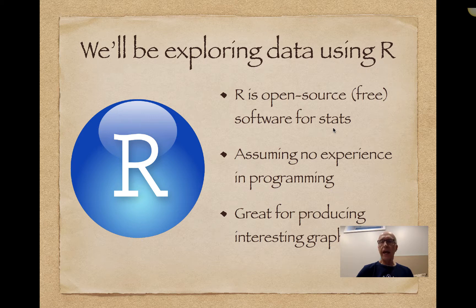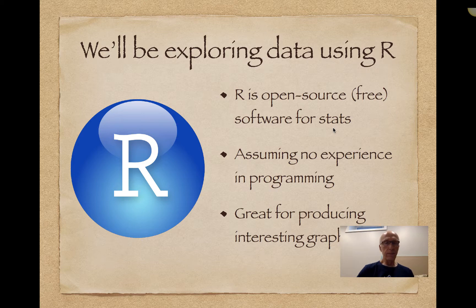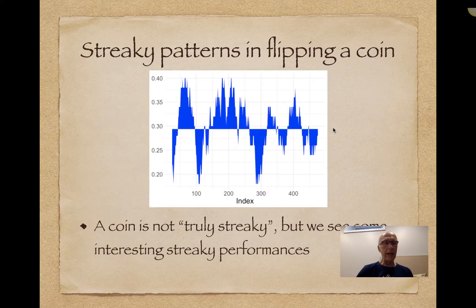We'll be using open source software called R. This is relatively easy to learn, and I'm not assuming any experience in programming. One thing that R is especially good at is creating interesting graphs. Here's a simple example: I'm actually simulating coin tosses and looking at patterns of streakiness in coin flipping. Students are usually surprised at the kind of streaky patterns that you see when you flip a coin.